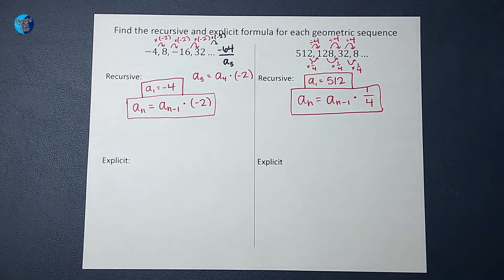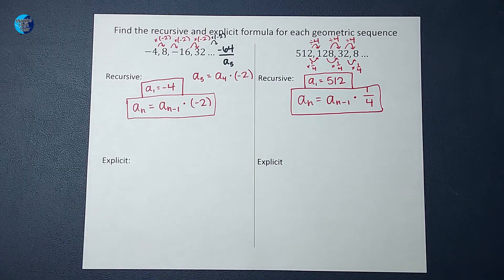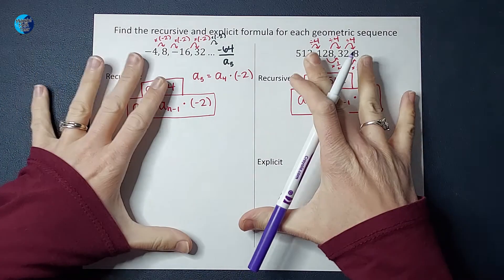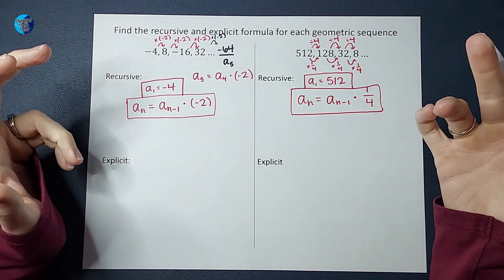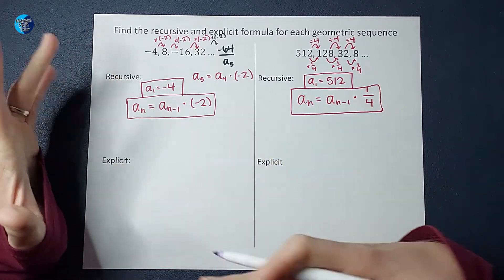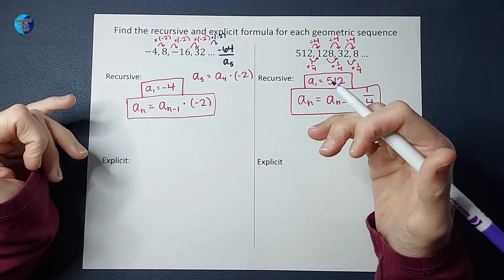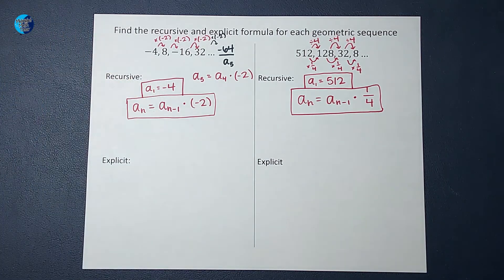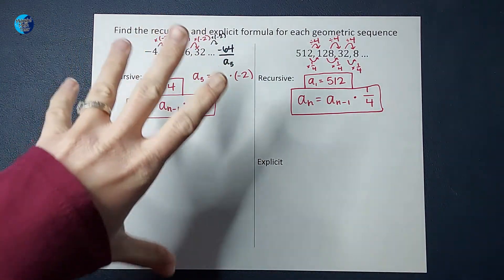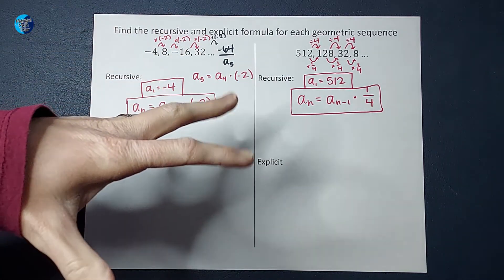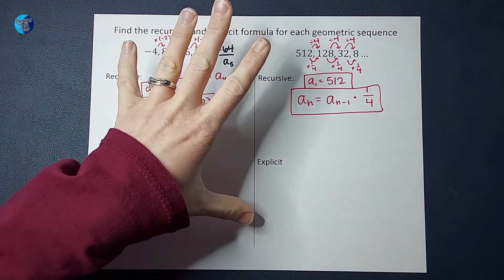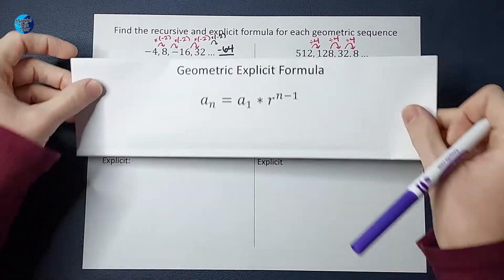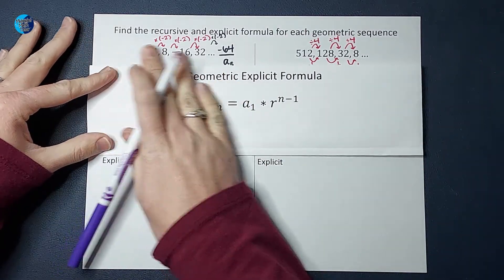Explicit formulas are my favorite. They are so cool because you can just be like, I want to know the five hundredth term, you plug in five hundred for N, and you get it, and you don't have to know the term before. I'm going to show you a formula that we are going to fill in for this, but I don't want you just to memorize it. We're going to talk about why it works. This is our geometric explicit formula.